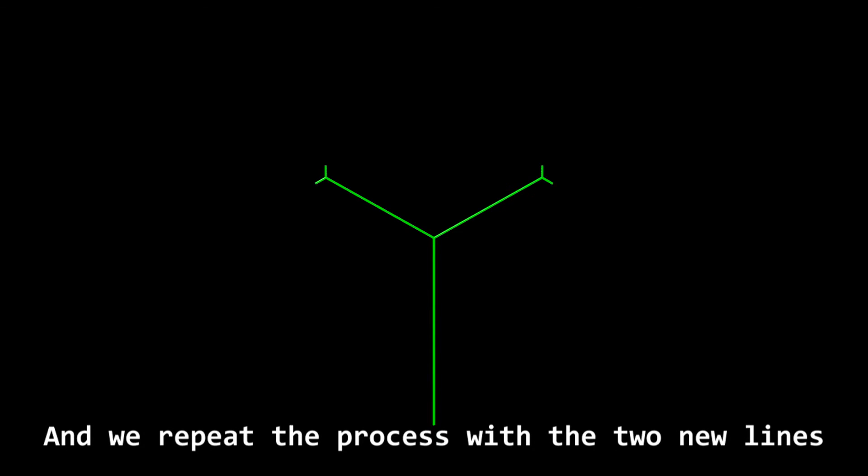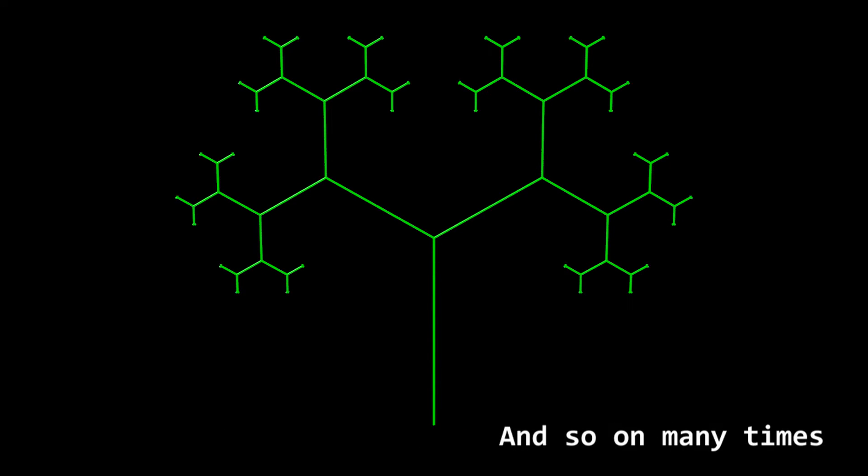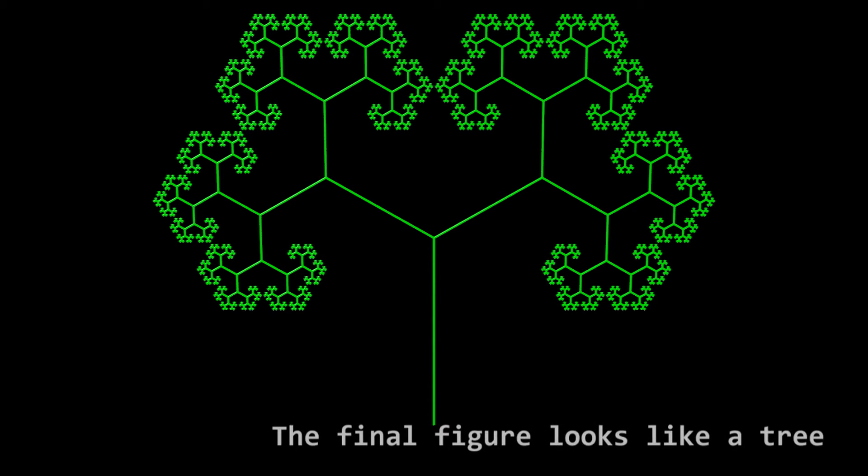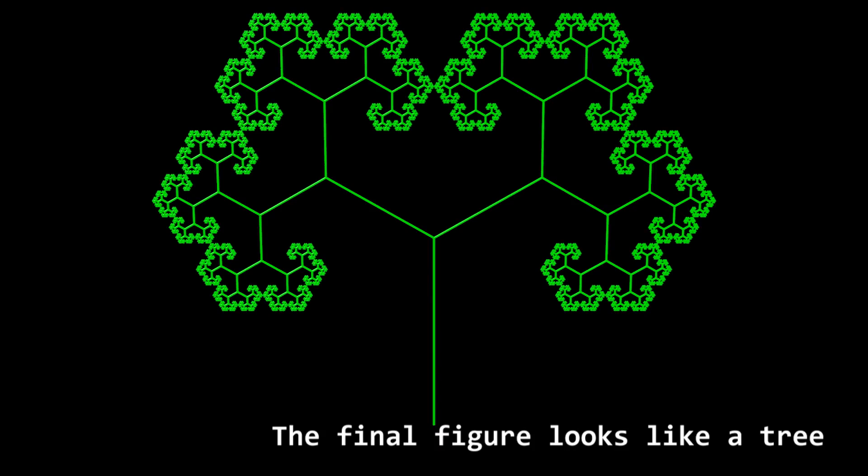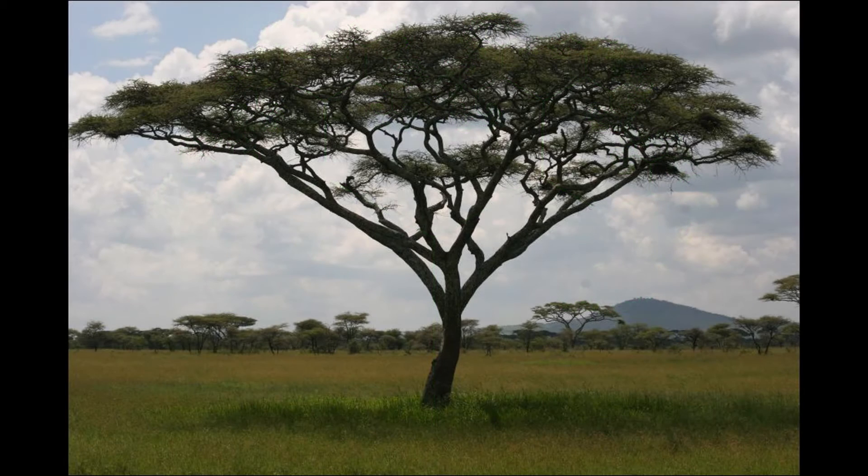Let's draw a vertical line. And then we add two more, a bit smaller, separated and inclined. And we repeat the process with the two new lines, and again with the four new ones, and so on many times. The final figure looks like a tree. That is a fractal.